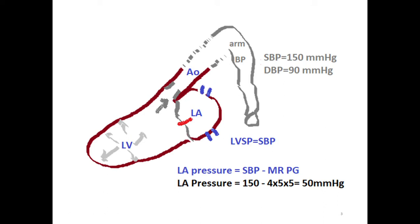Now, what about left atrial pressure? During systole, the left ventricle has a pressure equal to systolic blood pressure and tries to push blood — in the case of MR — back into the left atrium. On the other side, the pulmonary vein system pushes blood into the left atrium toward the left ventricle. So left atrial pressure is against left ventricular pressure, and knowing these two allows us to calculate the pressure gradient of the MR jet.